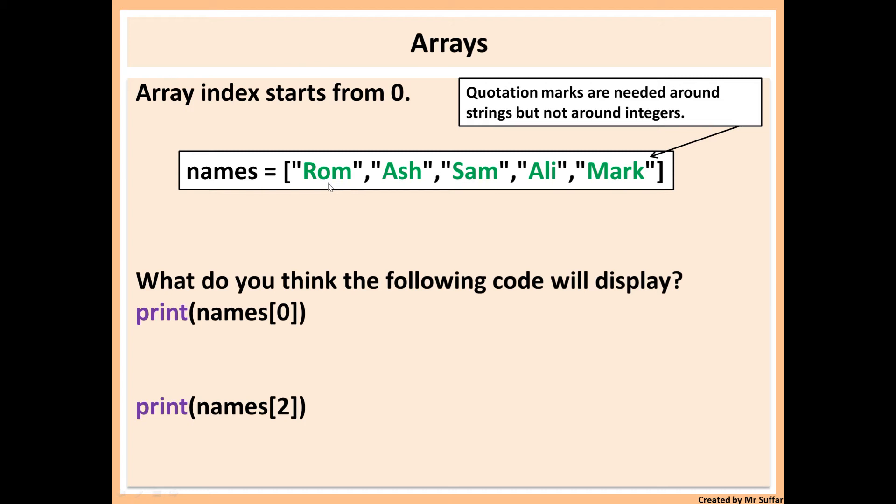To access, print names[0], this will access index 0 which is Rom, because Rom is on index 0. This will display just Rom. Print names[2], this is index 2 which is Sam, so Sam is on index 2.